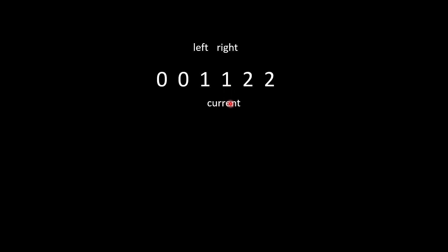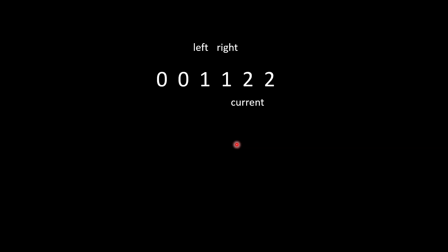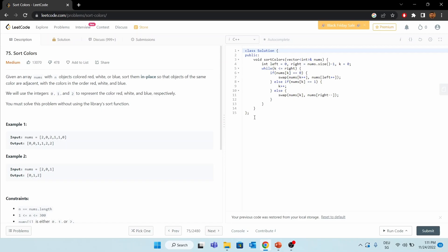Now looking at the values of the current and right pointers, the current pointer has become greater than the right pointer, so our loop terminates. Looking at the array, we have our sorted answer. Using the Dutch Flag algorithm, we solve this problem in linear time — O(n) — and with no external memory, giving us constant O(1) space complexity.